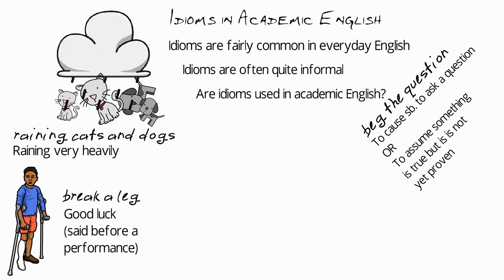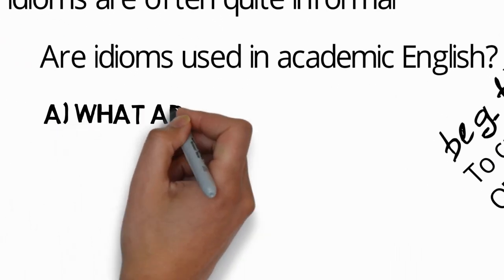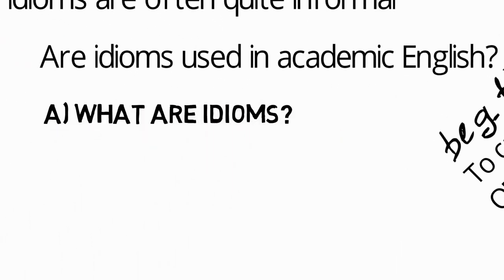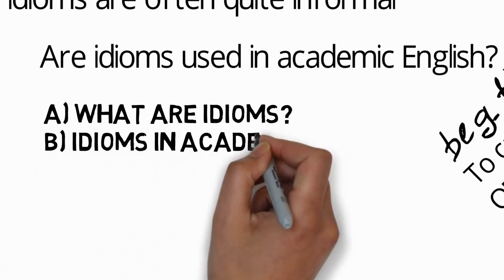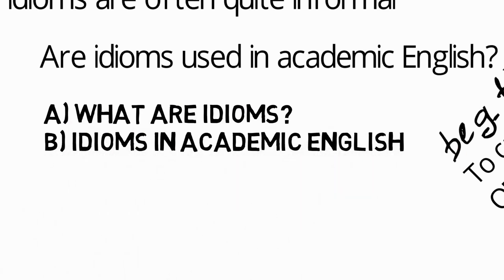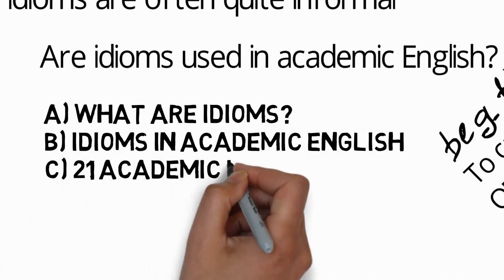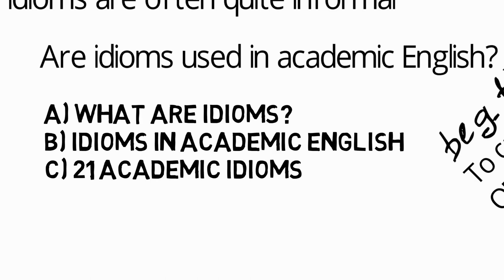So this video has three parts. First we'll have a very brief definition of idioms, just so that we're clear what we're talking about. Then I'll give some background to idioms in academic English, including the results of two research articles. And finally, which is the main part of the video, you'll see 21 academic English idioms in detail.